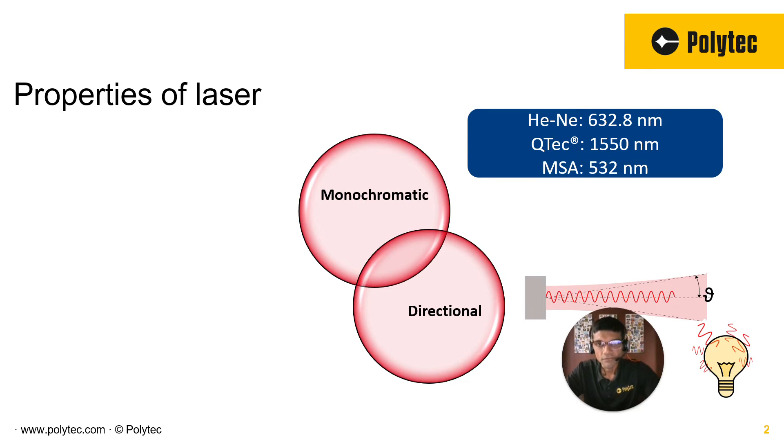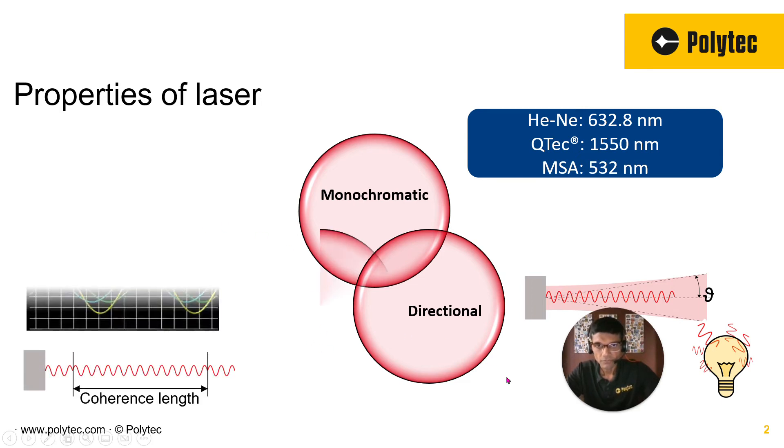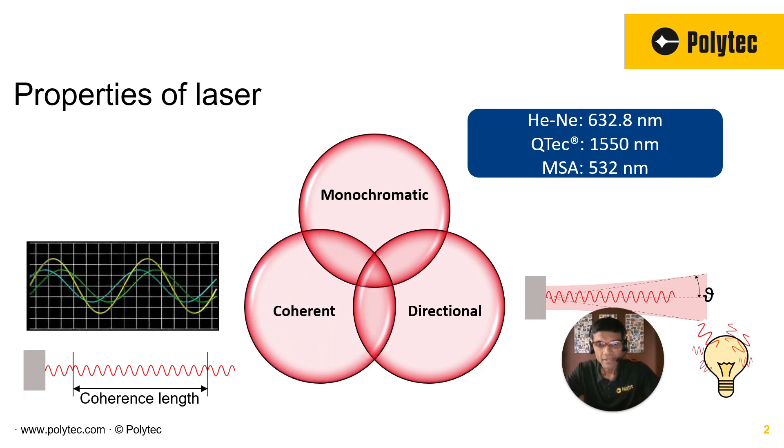And the final property, which is probably the most important or just equally important, is it has to be a coherent light source. Now, what do we mean by coherent? There are several ways to explain it, but here's how I understand it. If you think of light as a bunch of photons, a coherent light source means all those photons are moving together in phase with each other for a certain length. That certain length during which it still stays together is called the coherence length.